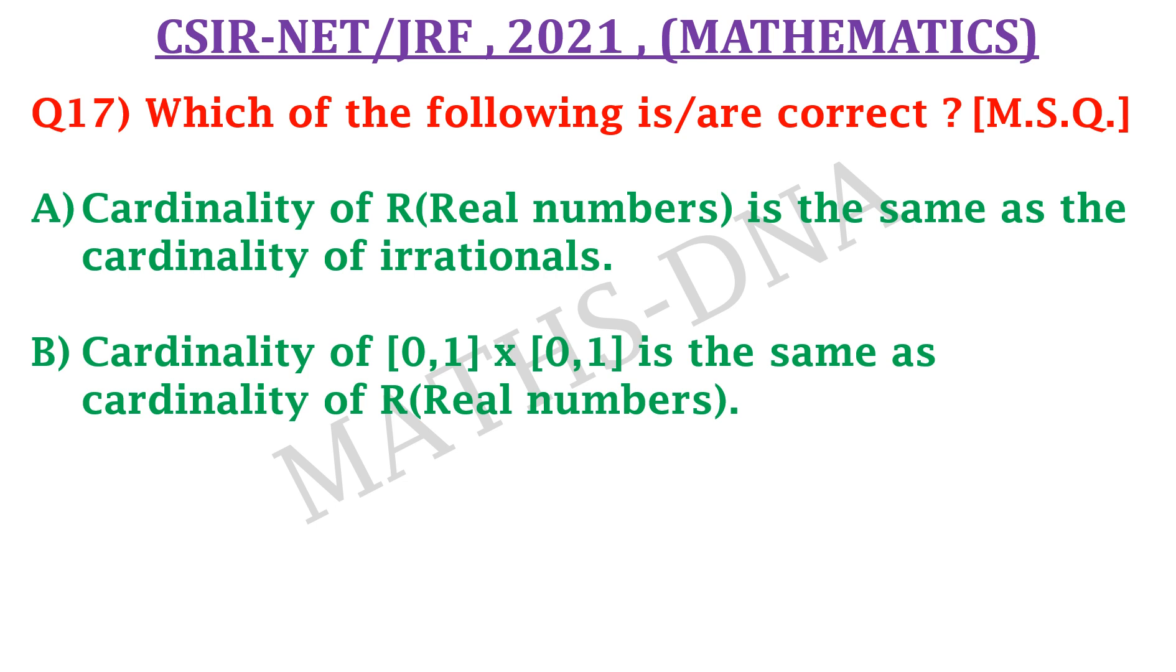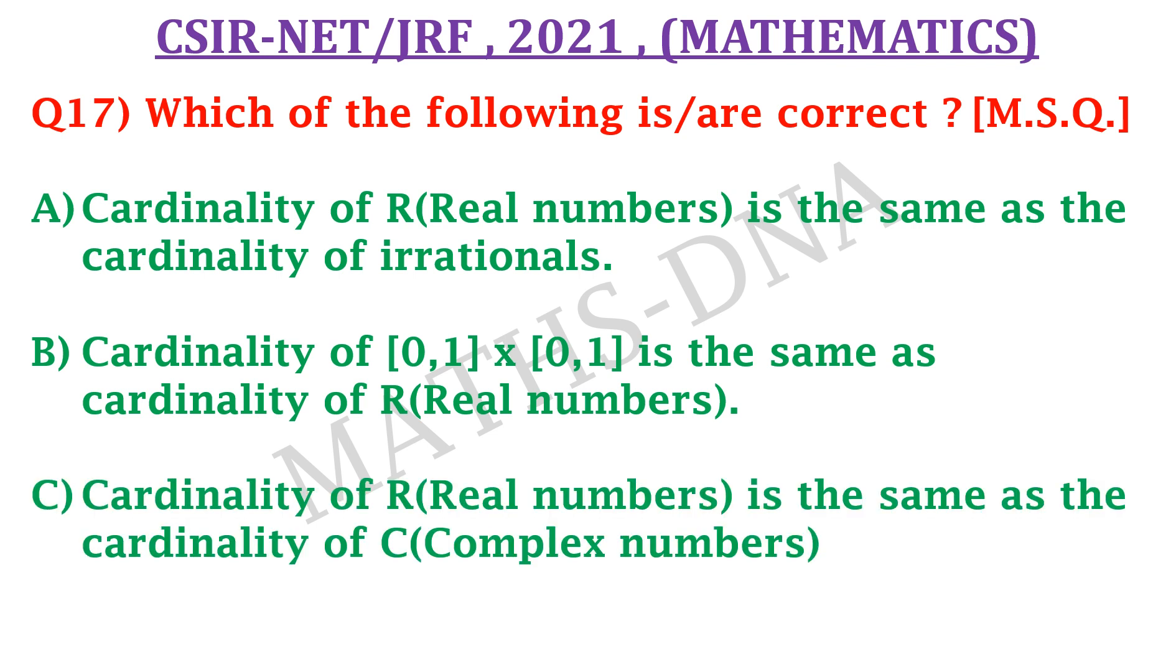Second, cardinality of closed interval [0,1] × [0,1] is same as cardinality of R, that is, real numbers. And option C, cardinality of R is same as the cardinality of C, where C is complex numbers. In option D, none of them.